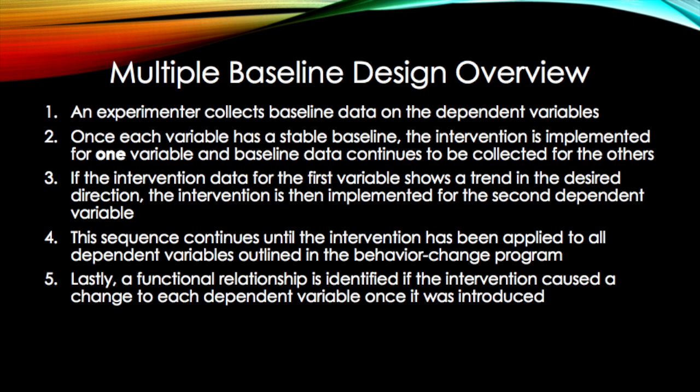If the intervention data for the first variable shows a trend in the desired direction, the intervention is then implemented for the second variable. This experimental sequence continues until the intervention has been applied to all dependent variables outlined in the behavior change program. A functional relationship is identified if the baseline data remains consistent until the intervention is implemented and causes a trend shift for each variable.